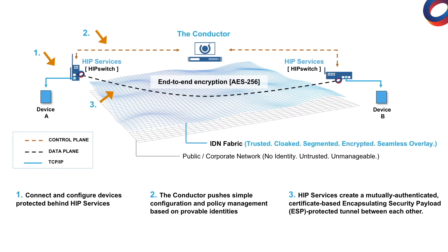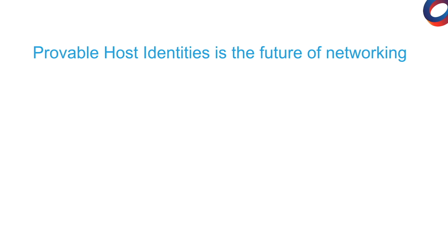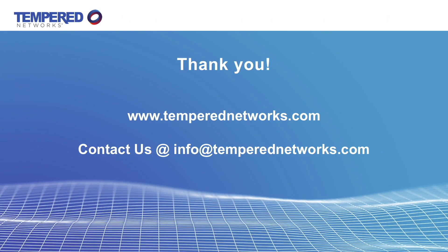This has been a quick overview of the foundational components of an identity-defined networking fabric. We believe that making provable identity native to all network things is the cornerstone of unifying and simplifying networking and security. We're really excited to be bringing this technology to our customers, helping them solve problems they've been struggling with for years, with no easy solution at hand. Now organizations can easily build flexible and secure networks that are cost-effective to manage, making it easier than ever before to get the right devices and individuals access to the right resources. Thanks for watching and please reach out to us for a demo if you found this interesting.